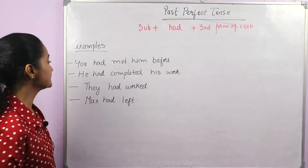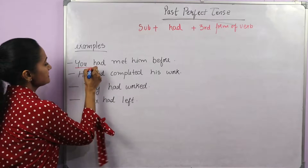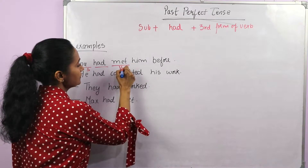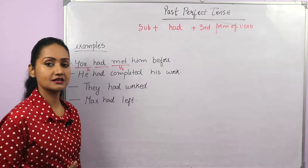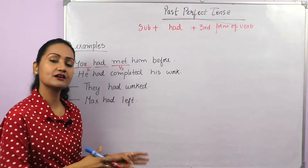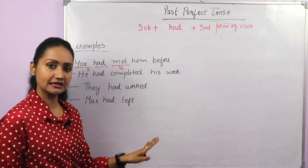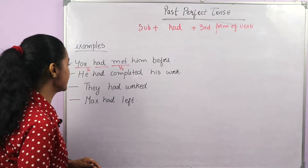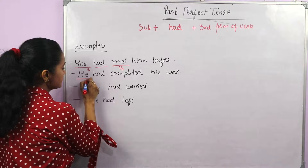Now let's see some examples. 'You had met him before.' So this is the subject, then we have 'had', and then the third form of the verb. The verb here is 'meet' — it is an irregular verb and the second and third form is 'met'. I have made a separate video about regular and irregular verbs; I'll mention the link in the description box. Next: 'He had completed his work.'